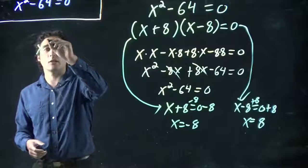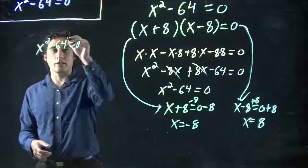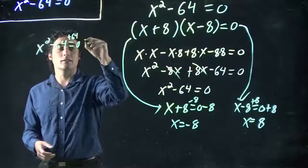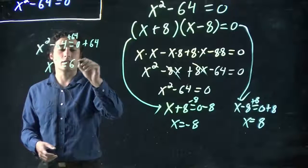It's the idea we add what? x squared minus 64 equals zero. Well, if I add 64 to both sides, I get x squared equals 64.